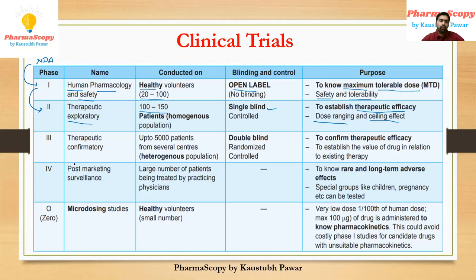After phase two, the new drug application moves to phase three. Phase three is the last phase — after qualifying phase three, the new drug application is approved. Always remember: phase three is the stage where, if the new drug application qualifies, it is approved by the regulatory bodies.